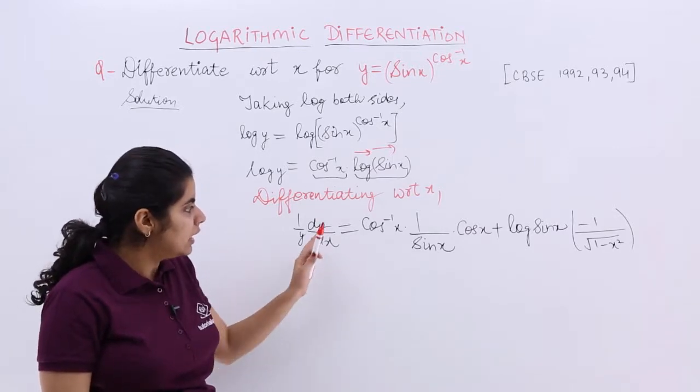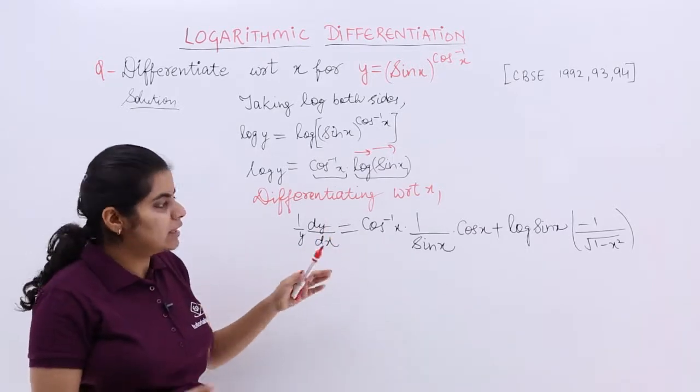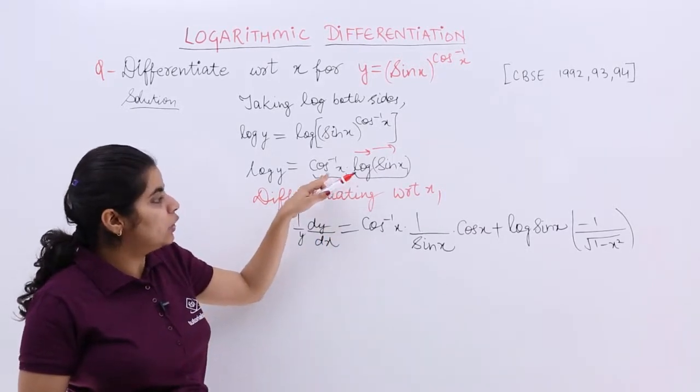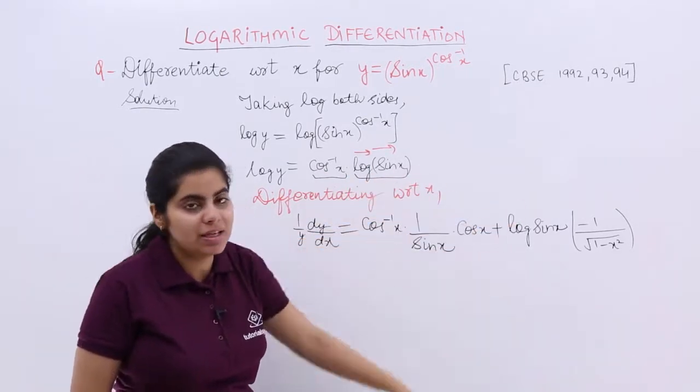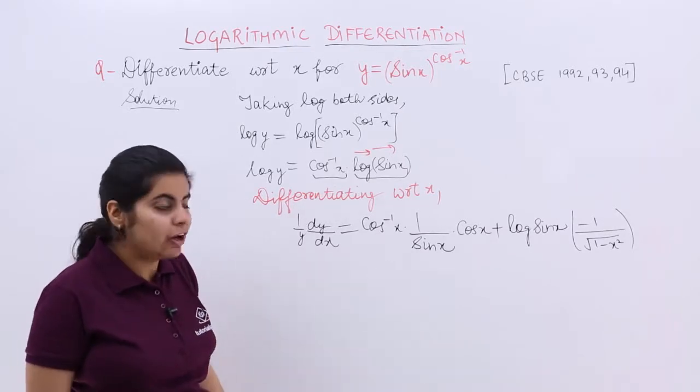Leave the second as it is. Take the differentiation of the first. What is the differentiation of cos inverse x? It is nothing but if you remember the formulas, minus 1 upon under root 1 minus x square. Now what has to be done? Now let's simplify it. Let's make things a bit more clear.